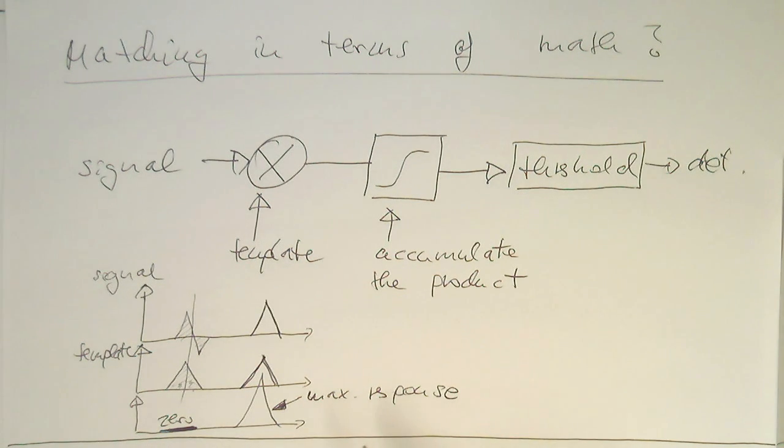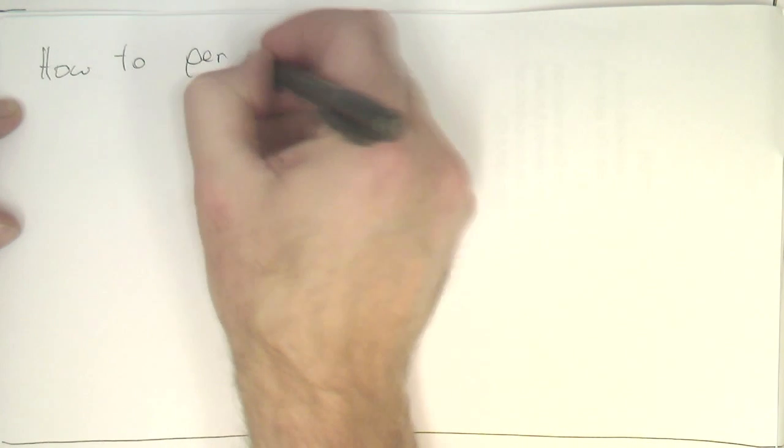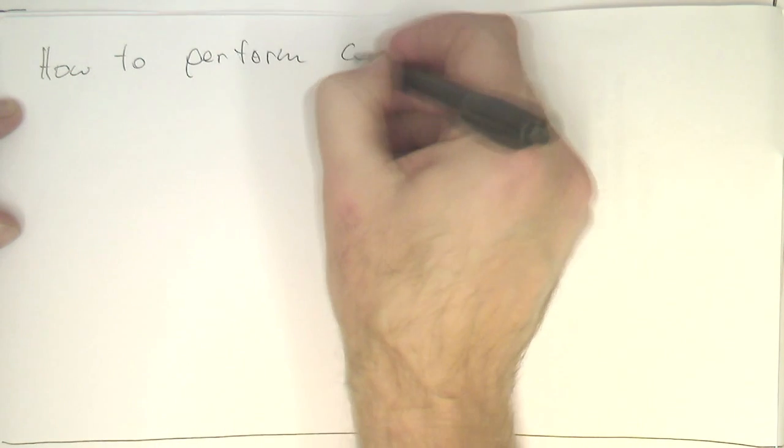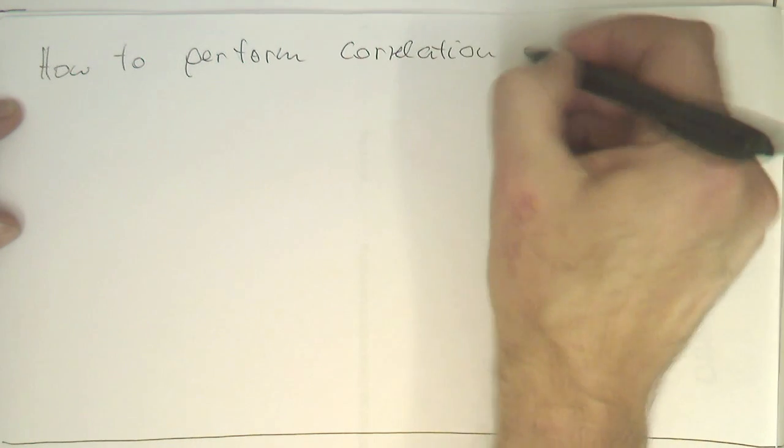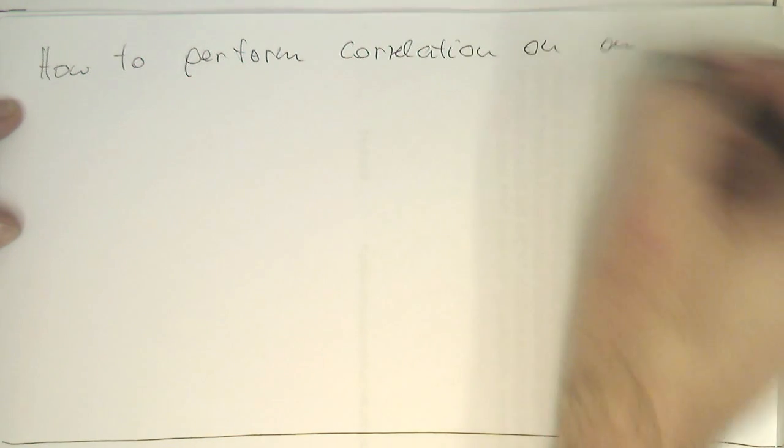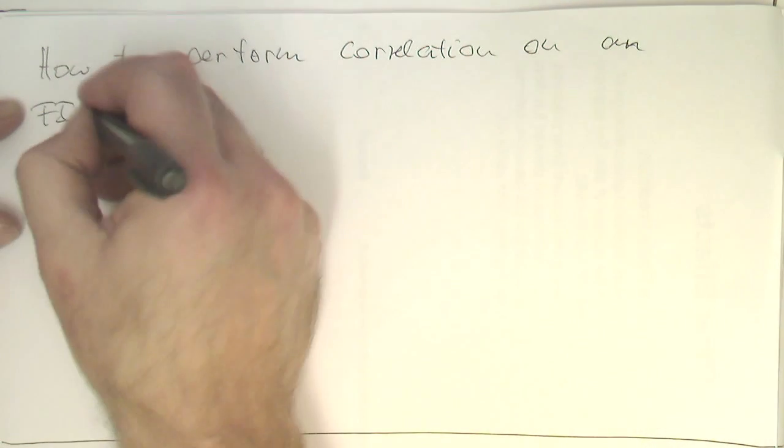And now the question is, how can we implement this here with our filters? What we would like to do is we would like to implement an FIR filter with this. So, how to perform correlation operation on an FIR filter.